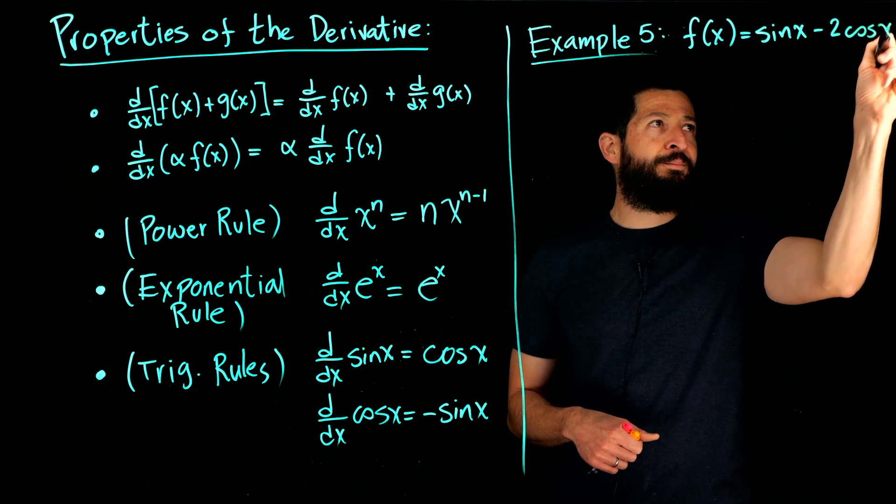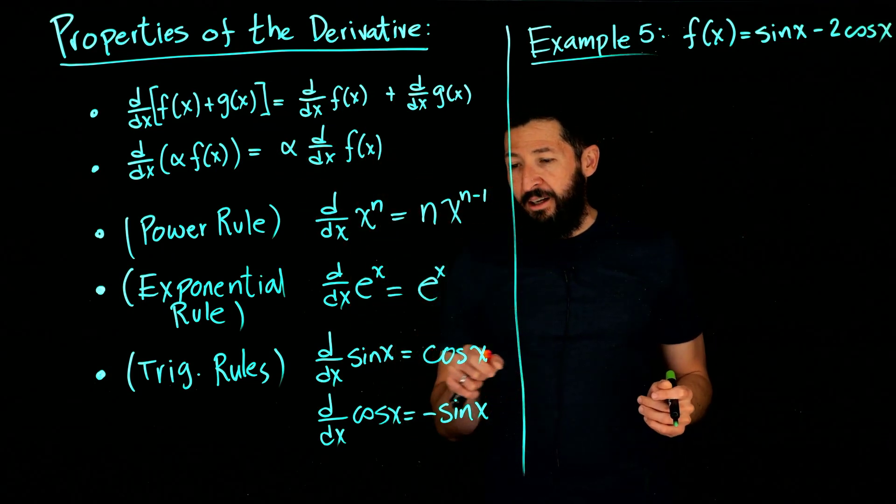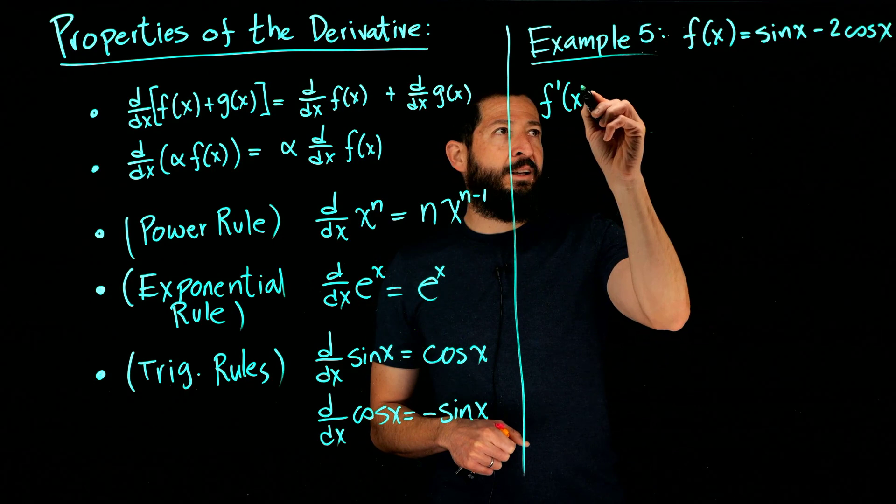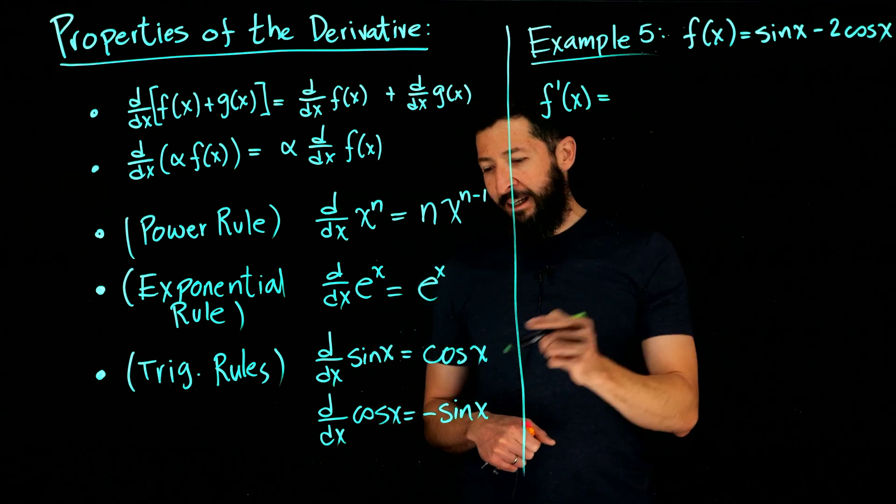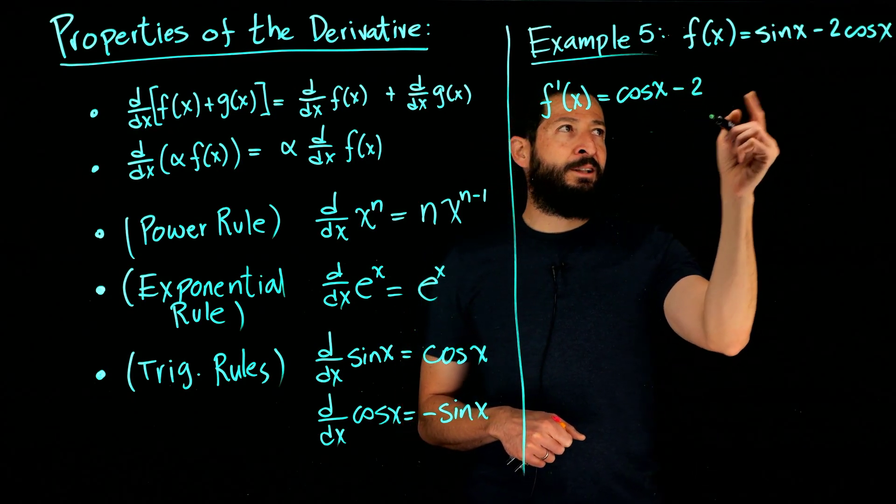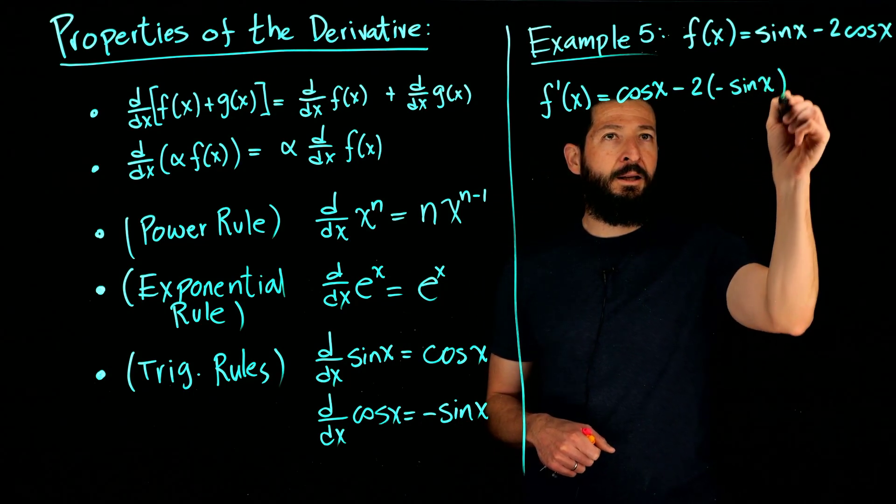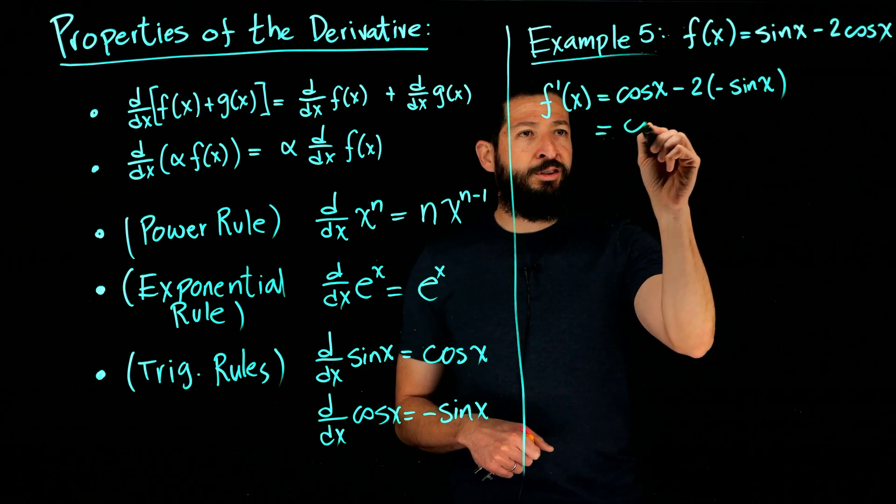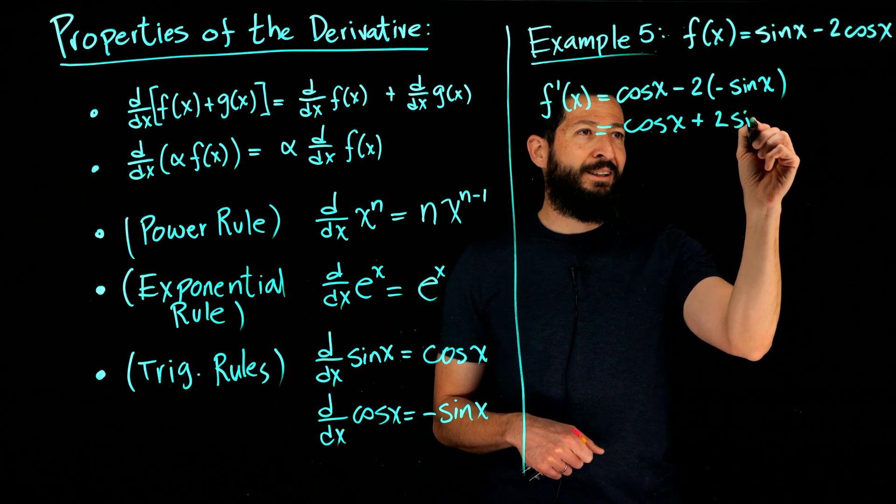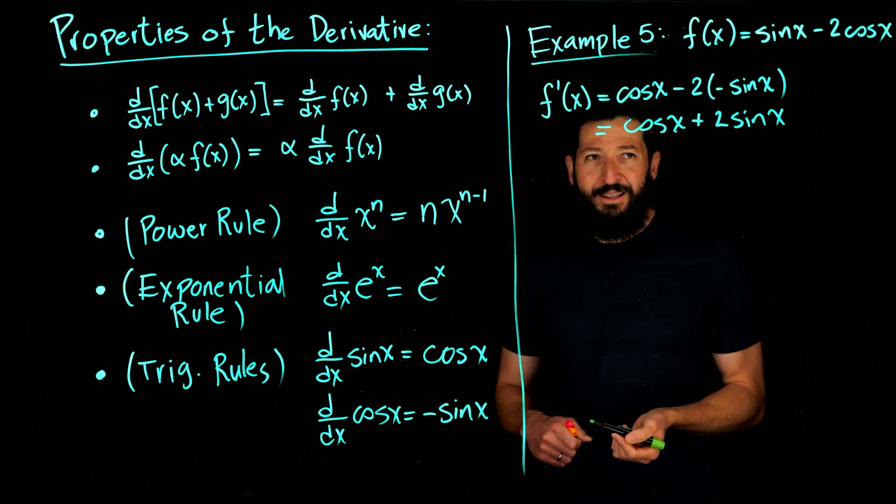That one is just using linearity and using these two rules. So the derivative in that case is going to be the derivative of the sine, which we said is the cosine, minus 2 times the derivative of the cosine, which we said is negative sine. So you just simplify this one. It becomes negative negative plus, so that's your derivative.